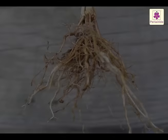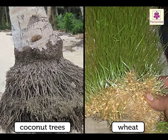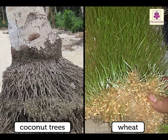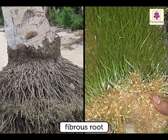Fibrous root. Some plants like grasses, wheat and coconut tree don't have a main root. They have a bunch of small roots. These are called fibrous root.